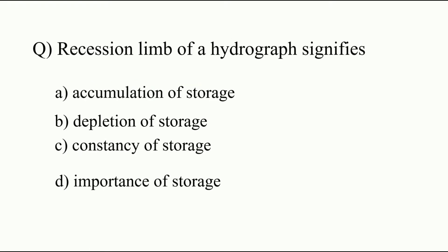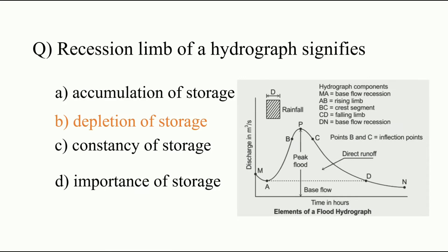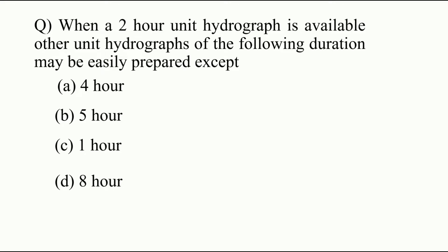Next question: the recession limb of a hydrograph signifies — a) accumulation storage, b) depletion of storage, c) constancy of storage, d) importance of storage. The answer is B, depletion of storage. In the rising limb, we get accumulation storage; in the recession limb, we get depletion of storage. So the answer is B.